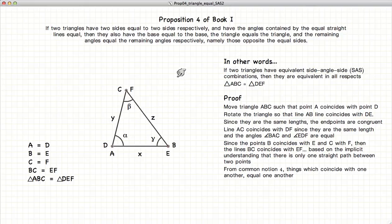So to summarize, if we have two triangles where the side, angle, side are equal, then those two triangles are equal in all respects.